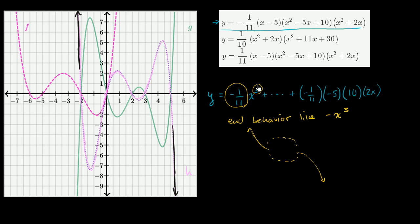So we can feel confident that this function is h of x. Now, the y-intercept: when x equals 0, this whole thing equals 0, because the lowest degree term isn't a constant — it has an x in it. Actually, all three of these have a y-intercept of 0, because all three have a lowest degree term that involves an x. So we can really just concern ourselves with the highest degree terms.